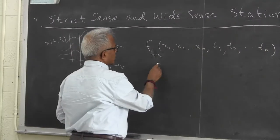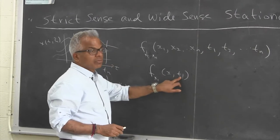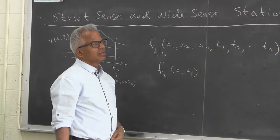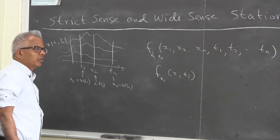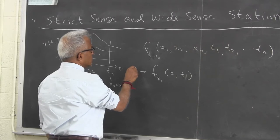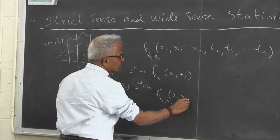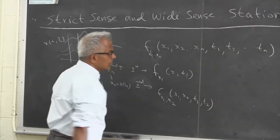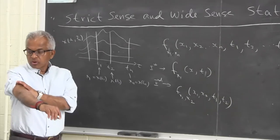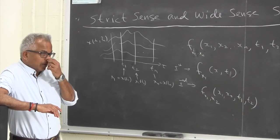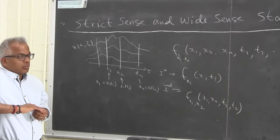Generally we deal with the first order and second order characterization. The first order characterization means you take a random variable at any time index and it has a density function, but depending on which time index it refers to, it will in general be a function of x and t. The second order characterization involves two random variables x1 and x2 corresponding to time indices t1 and t2. If all these density functions are known for all values of t1 through tn with n arbitrary, that's the complete characterization of the random process x(t).